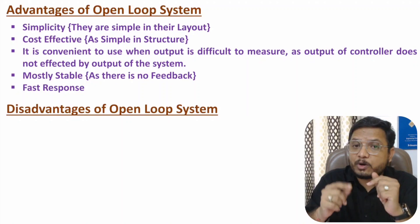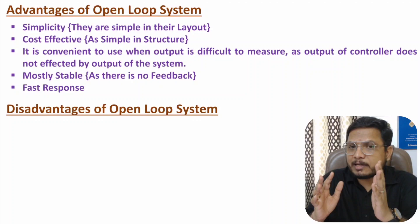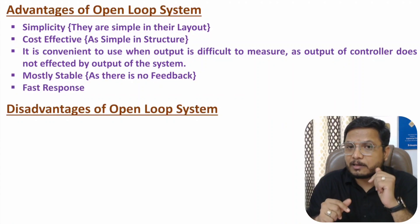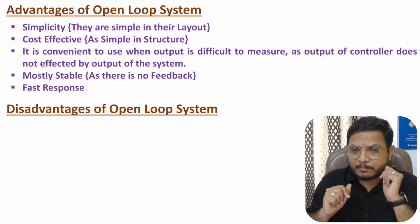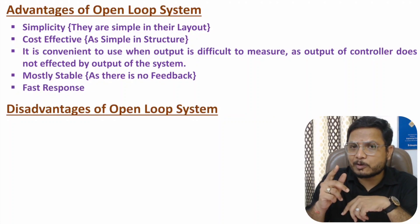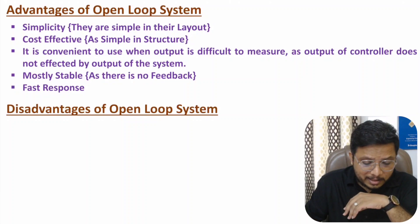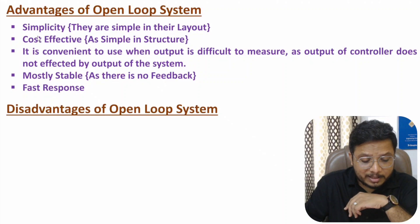With open loop systems we have faster response. The reason is the gain of the open loop system is very high. As the gain of the system is very high, the response of the system is fast. With a closed loop system, the gain decreases, resulting in a lower response. So open loop systems are mostly stable, have faster response, are simple in structure, and are cost effective.